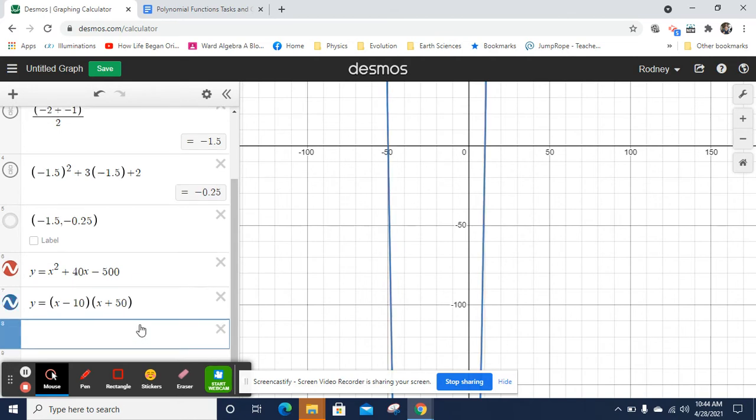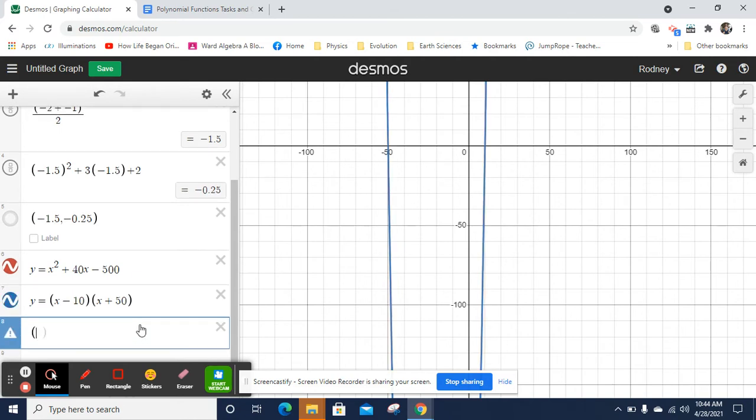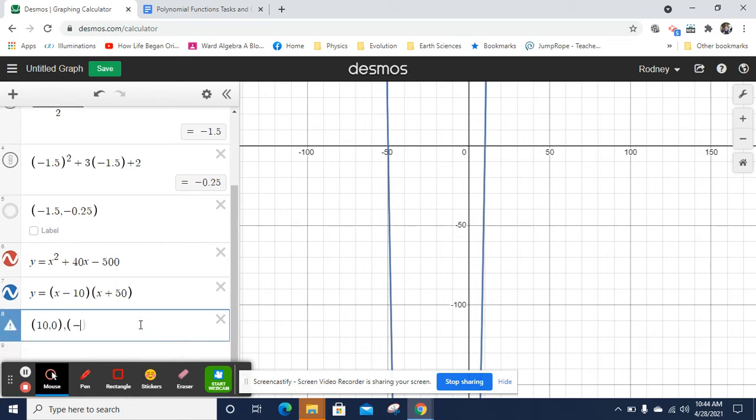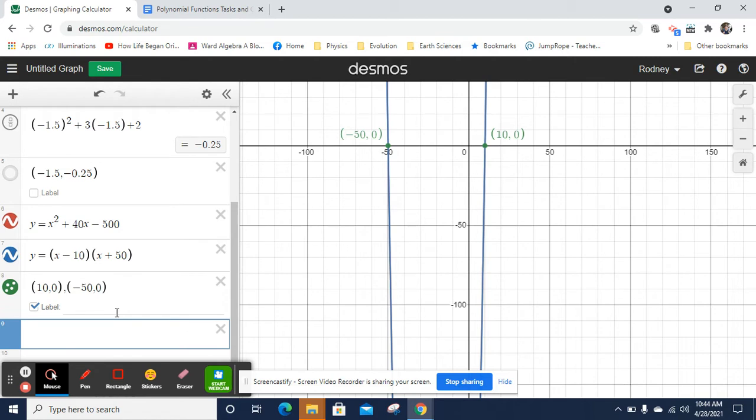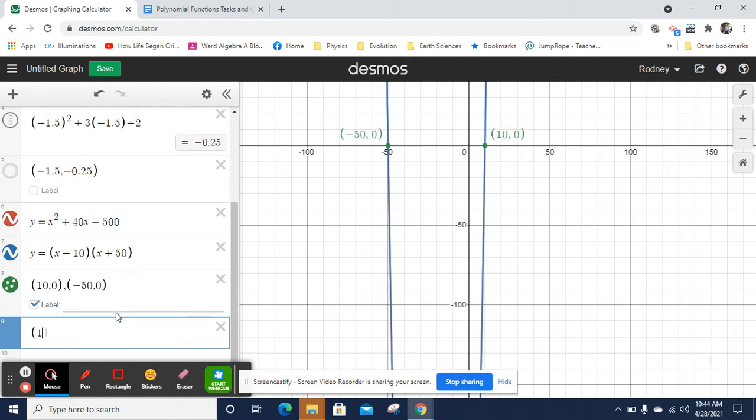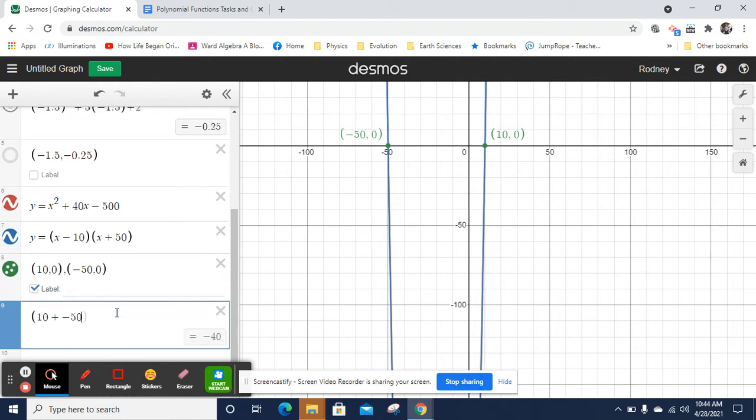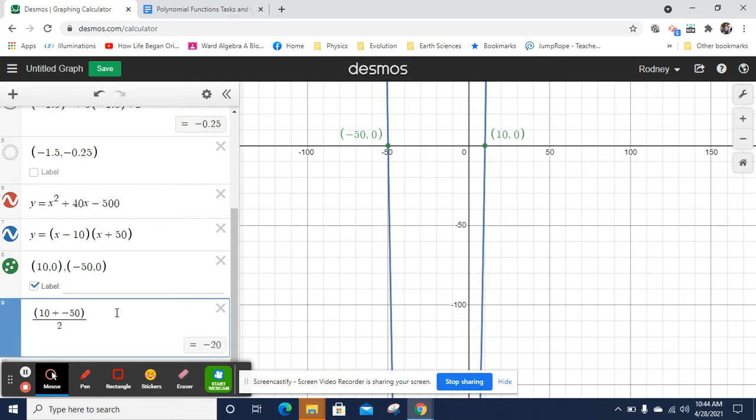So I now know that I'm going to have x intercepts at 10, 0 and negative 50, 0. And there they are. I plotted them. And now I'm going to get the average of those two points. So I'm going to say 10 plus negative 50 divided by 2. And look at that. I get an average of negative 20.